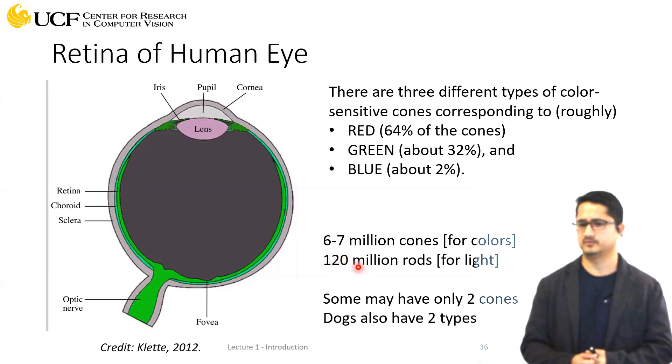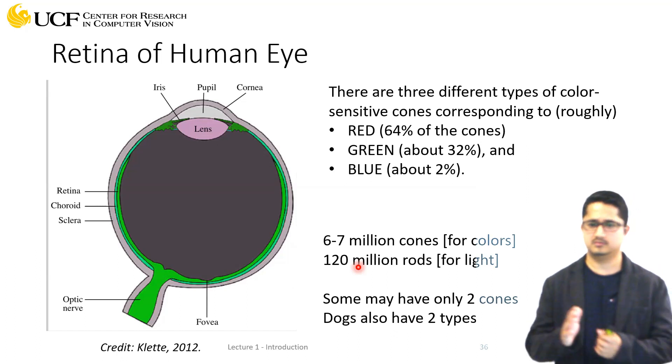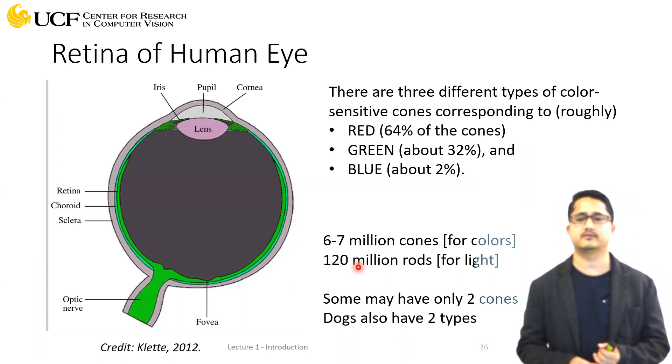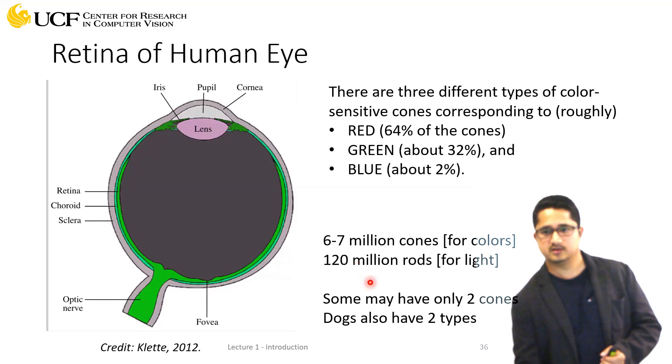Rods work like a grayscale image—they just indicate whether something is present or not and won't discriminate between different colors.